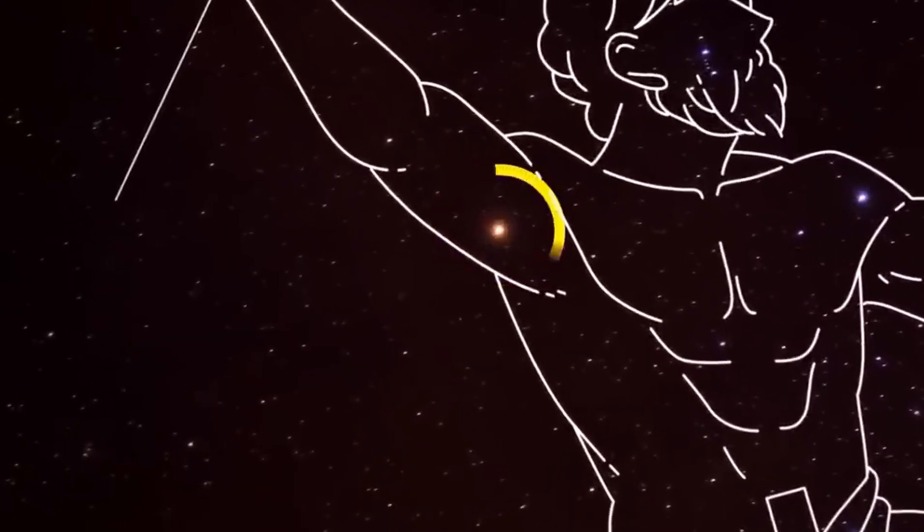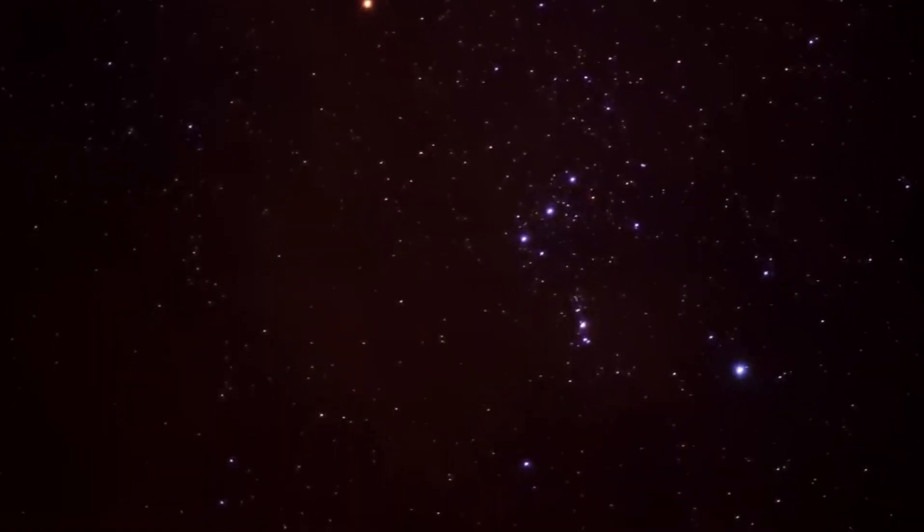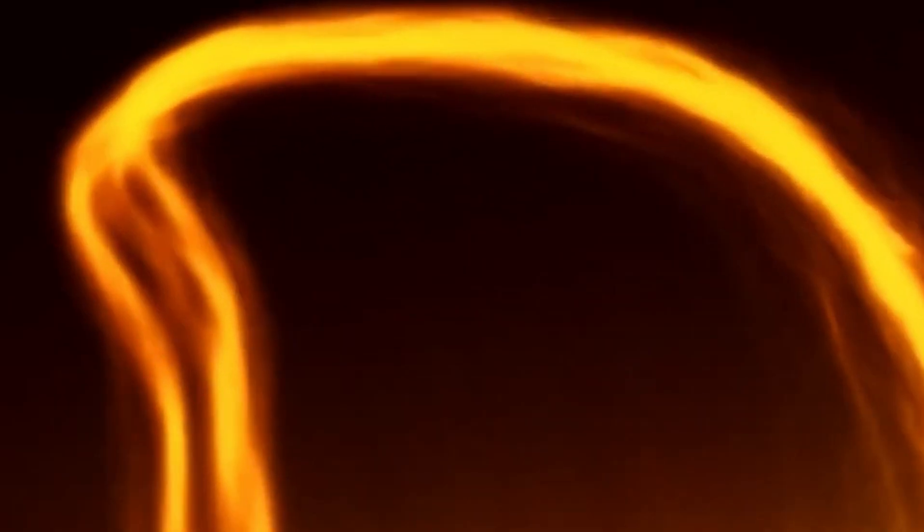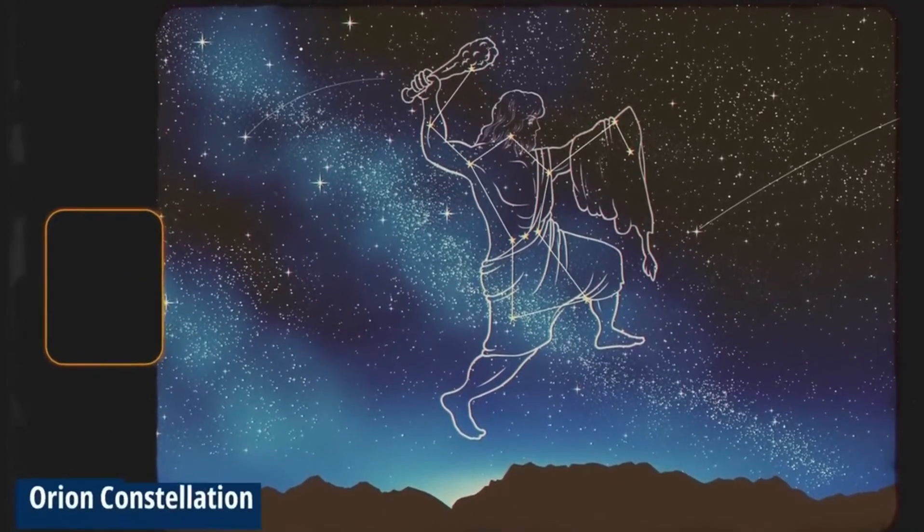When it comes to brightness, Betelgeuse is quite the shining star with a super bright rating of about minus 6. Morgan MacLeod, a researcher from Harvard University, explains that Betelgeuse is special because it's huge and not too far away.